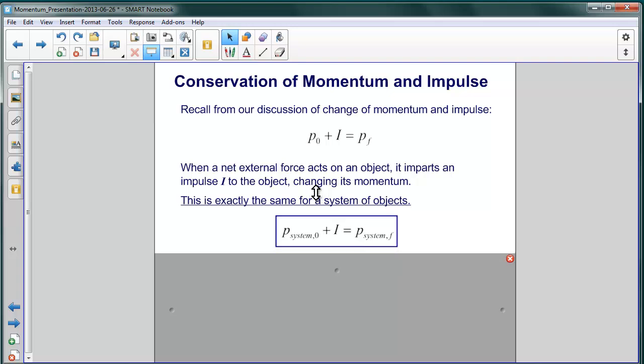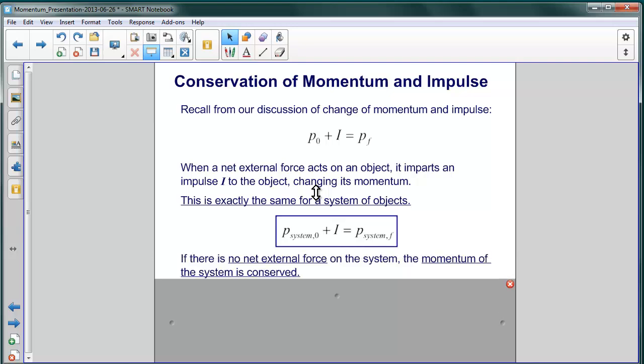Now, remember, impulse comes from an external force. So if the system is isolated, if the system doesn't interact with anything on the outside, it can't be affected by an outside force. That means that the impulse has to be zero. If the impulse is equal to zero, then the momentum of the system before and the momentum of the system after are the same. It means that the momentum of the system is conserved.